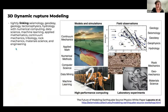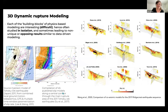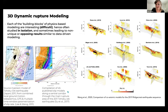In an ideal picture — as described in a highly recommended white paper by Nadia Lapusta and many colleagues — we could link seismology, geodesy, mechanics, material science, and engineering, utilizing advances in each field. However, each of these building blocks of physics-based modeling is so interesting or difficult that they're often studied in isolation, sometimes leading to non-unique or opposing results — similar to purely data-driven modeling. Here are some examples: different data-driven inferred co-seismic slip models of the 2019 Ridgecrest earthquake sequence.